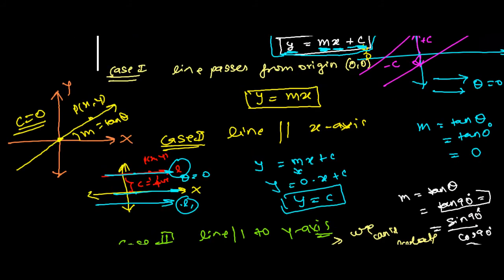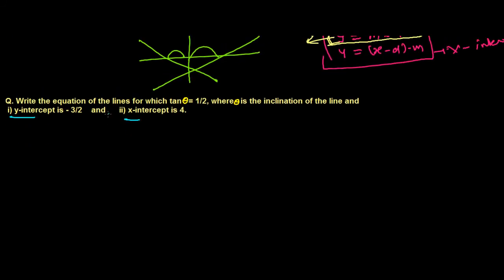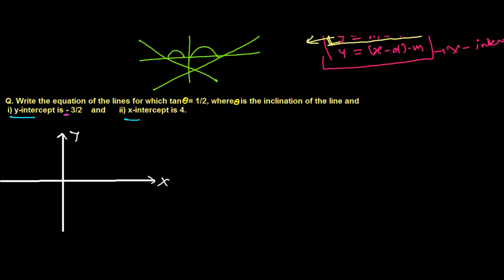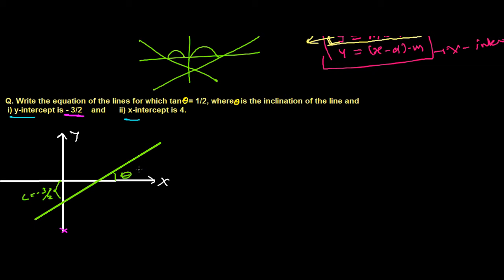Alright, let's do the first problem. Let me draw a rough figure. Y-intercept minus 3 by 2 means the line is cutting the y-axis in the negative direction. So c is actually minus 3 by 2. We don't know the value of theta, but we know tan theta — which is our slope — is equal to 1 by 2.